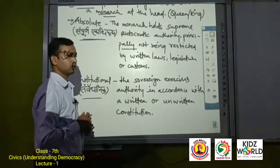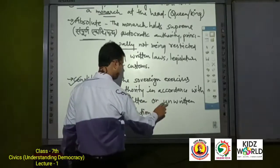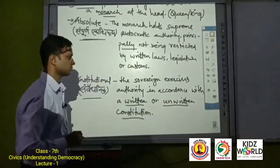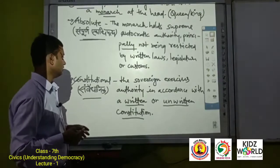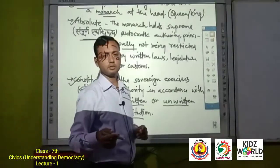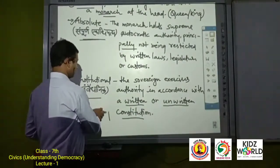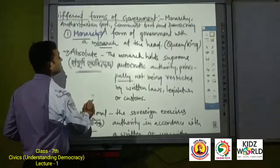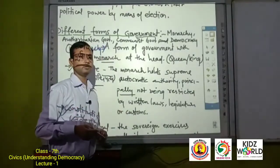Constitutional Monarchy — Samvidhani. इसमें the sovereign exercises authority in accordance with a written or unwritten constitution. Example के लिए हम Prime Minister ले सकते हैं, जैसे Indian country में है। इस तरह से different forms of government में से अगला form — Authoritarian Government — हम next class में discuss करेंगे। आज के लिए इतना ही, thanks.